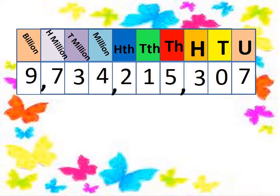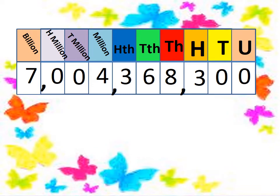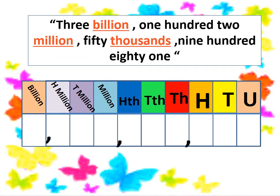If we have this number and want to read and write it in words, we start from the left and say: nine hundred thirty-four million, two hundred fifteen thousand, three hundred and seven. Another one: seven billion, four hundred sixty-eight thousand, and three hundred.